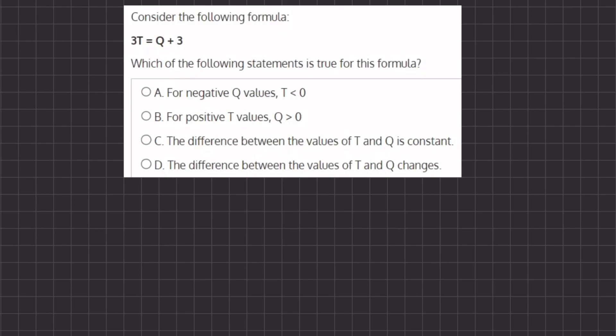All right, so in this problem we are going to consider the formula 3T = Q + 3. Now we're going to choose which of the following statements is true for this formula.